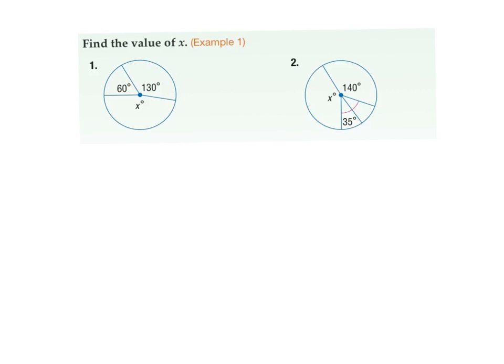So let's have a look at example one, question number one. You know all the way around is 360. So X is going to equal the 360 degrees minus the sum of 130 degrees plus your 60 degrees. So X is going to be 170 degrees.